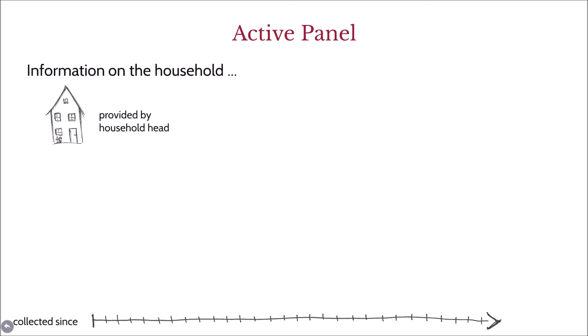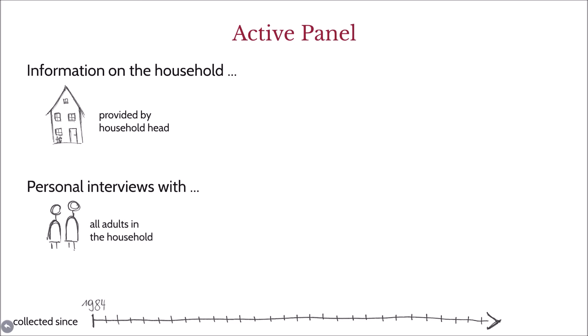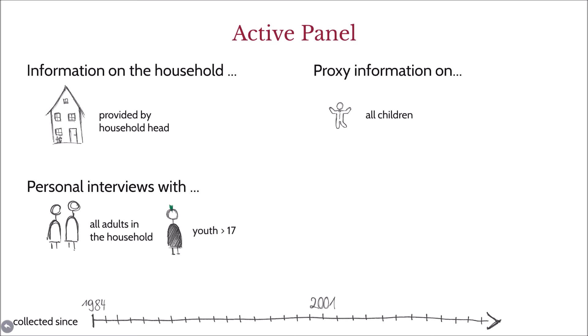In addition to household level information, the survey also provides individual level information on each adult household member. If there are children in the household who are below the age of 10, one of the parents will be asked to provide proxy information on the child. Children who are aged 11 or older are interviewed themselves, provided that the parents have given their consent. If a household member has died, the individuals still living in the household are asked to provide information about the last period of the respondent's life.